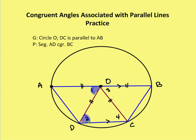I know that if I have two segments that are congruent, the angles opposite those segments are congruent. So I know that OD is congruent to OC, so angle two must be congruent to angle four. Now I have angles one, two, and four that are all congruent. With the two parallel lines AB and DC, alternate interior angles give us angle three congruent to angle four. So by the transitive property, angles one and three must also be congruent.